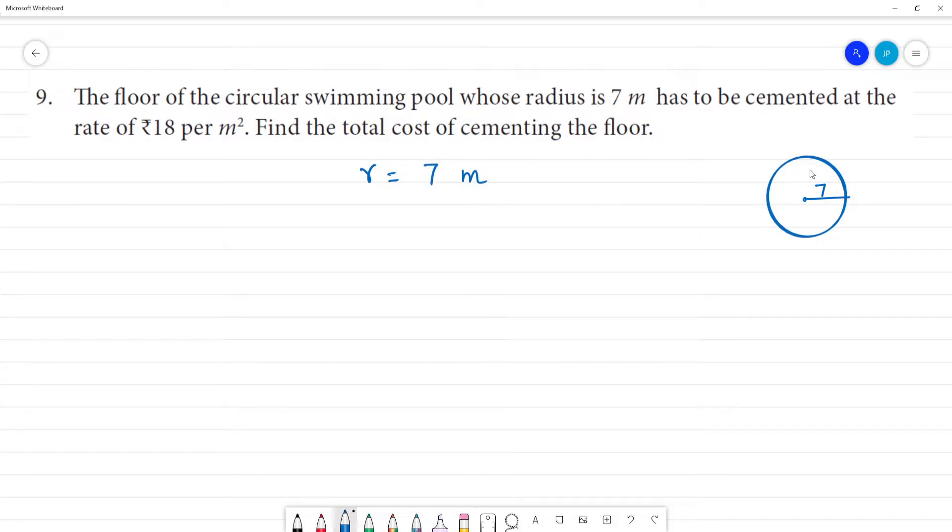Has to be cemented. Cemented at the rate of ₹18 per meter square. That is 1 meter square. The rate is ₹18 per meter square. Find the total cost.